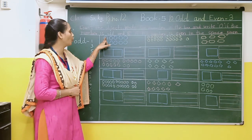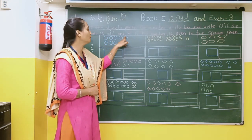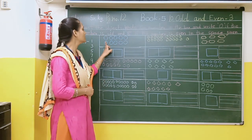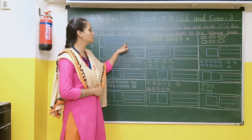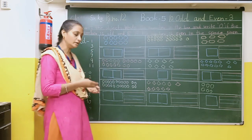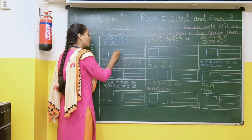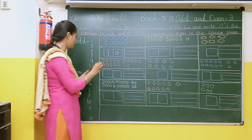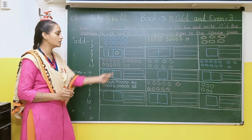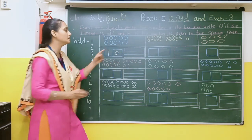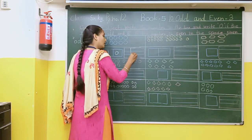First of all count: 1, 2, 3, 4, 5, 6, 7, 8, 9, 10. Here the number is 10. So 10 comes under even number. So what we have to write here? Capital E — E for even.